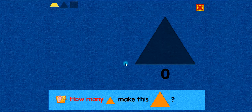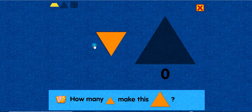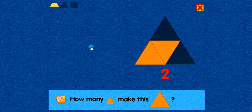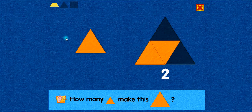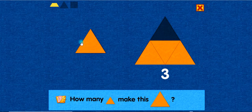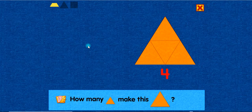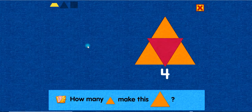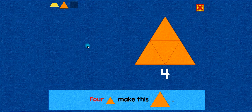How many triangles make this triangle? One! Two! Nice! You placed this triangle beside the center triangle. Three! Three! Good one! You placed this triangle beside the center triangle. Four! Good job! You placed this triangle above the center triangle. Four triangles make this triangle.